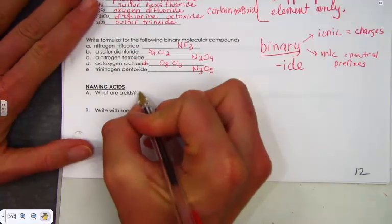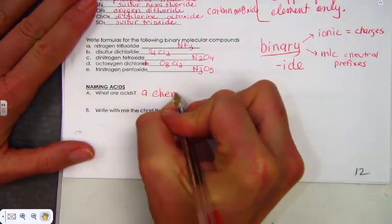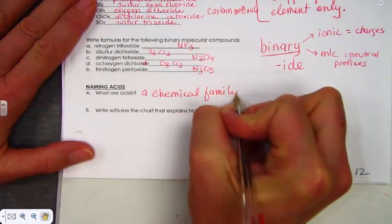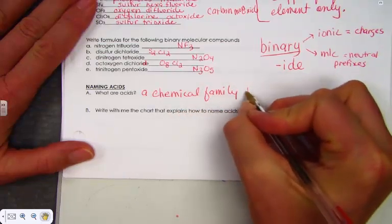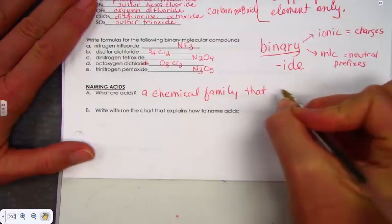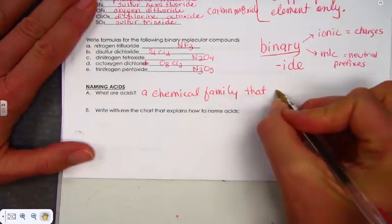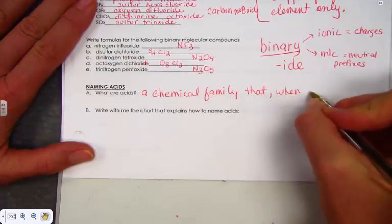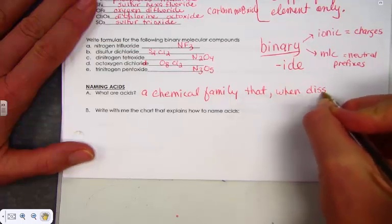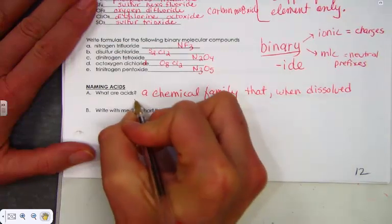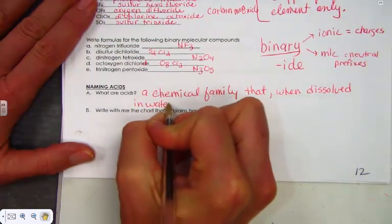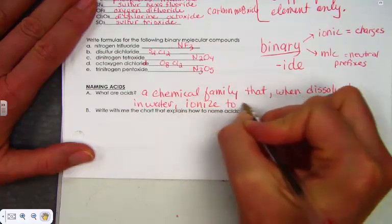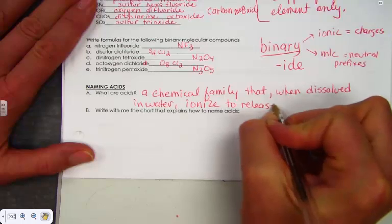Acids are a chemical family, and I am writing that down. Acids are a chemical family that, when dissolved in water, ionize to release hydrogen ions.